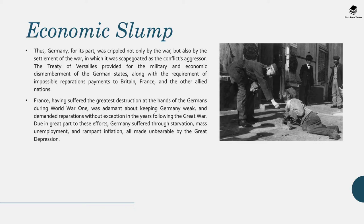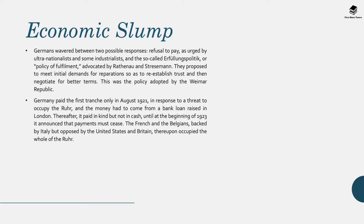France, having suffered the greatest destruction at the hands of Germany during World War One, was adamant about keeping Germany weak and demanded reparations without exception. Due in great part to these efforts, Germany suffered through starvation, mass unemployment, and rampant inflation, all made unbearable by the Great Depression. Germans wavered between refusing to pay as urged by ultra-nationalists, and a policy of fulfilment advocated by Stresemann — meeting initial reparation demands to re-establish trust and then negotiate for better terms. This was the policy adopted by the Weimar Republic, which ruled Germany from the end of 1918 to 1930.